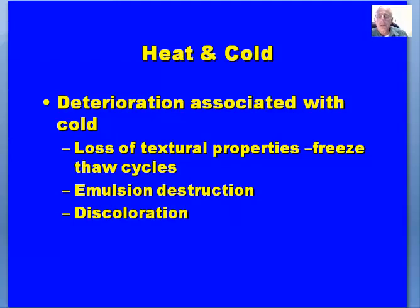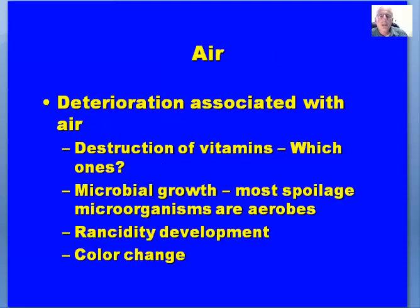There are modified starches that have been used to prevent loss of texture properties in frozen products, particularly gravies. Emulsion destruction and discoloration are also associated with cold deterioration. Deterioration associated with air includes destruction of vitamins, microbial growth — most spoilage microorganisms are aerobes but most foodborne pathogens are facultative — rancidity development from the breakdown of lipids, both enzymatic and non-enzymatic, and color changes that can occur as a result of the presence of oxygen.